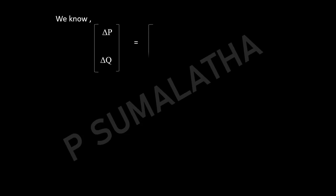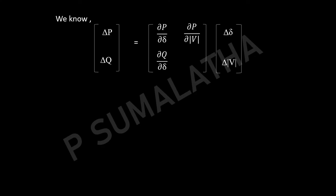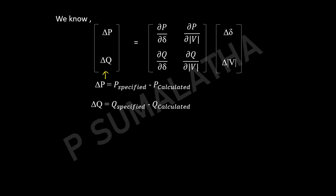Coming to the NR method, the basic equation is: [ΔP, ΔQ] = [J][Δδ, Δ|V|]. We get the relation between these four quantities in the form of the Jacobian matrix: ∂P/∂δ, ∂P/∂|V|, ∂Q/∂δ, and ∂Q/∂|V|. The mismatch matrix is: ΔP = P_specified − P_calculated and ΔQ = Q_specified − Q_calculated.